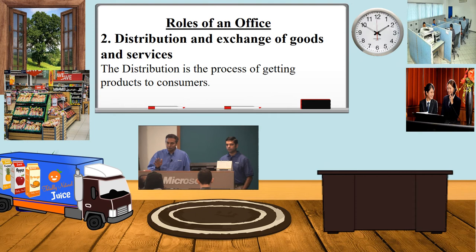The next role we're going to be looking at is the distribution and exchange of goods and services. Distribution is the process of getting products to the customer. The distribution department is tasked with the responsibility of getting the product to the user. Looking at the pictures, there is a distribution outlet at the top, and below that is a truck that distributes items to persons.